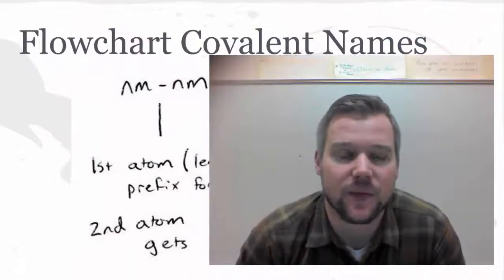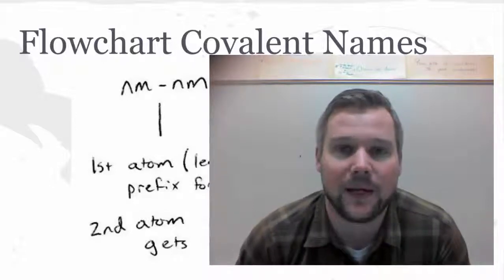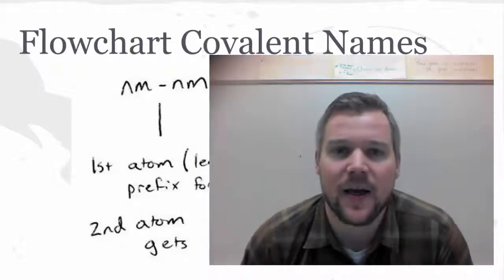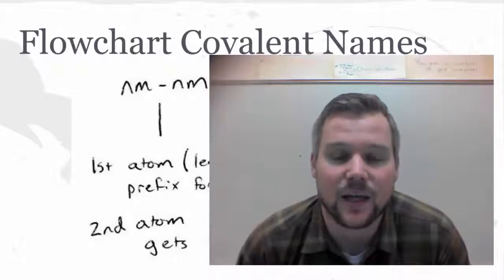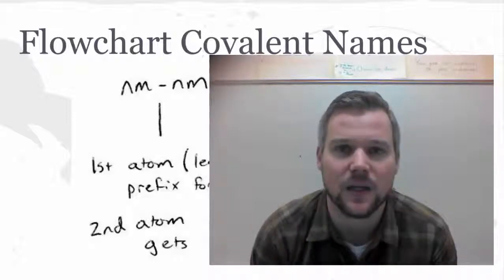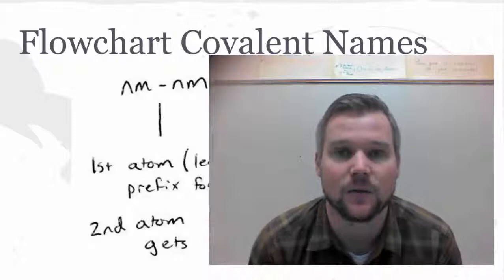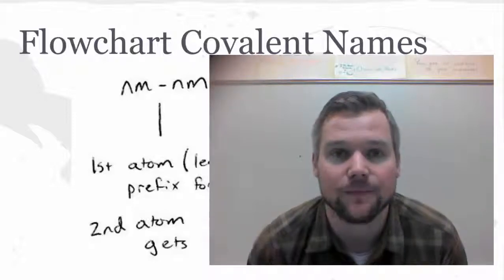What you should have learned by watching this video is how you determine if a compound happens to be a covalent compound by looking at nonmetal to nonmetal. And you now know that's called the prefix naming system. The first atom gets a prefix for subscripts two or greater. The second atom always has a prefix. You do need to memorize those prefixes. And don't forget that the second atom also gets the IDE ending on its name. Hope that helps. Thanks for watching.